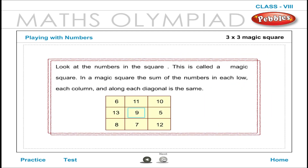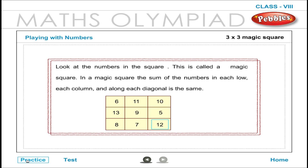3×3 Magic Square: Look at the numbers in the square. This is called a 3×3 magic square. In a magic square, the sum of the numbers in each row, each column, and along each diagonal are all equal.